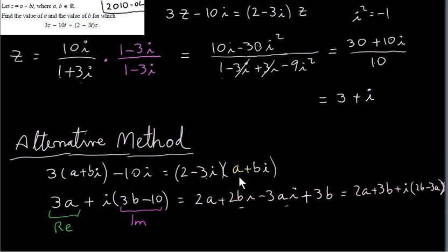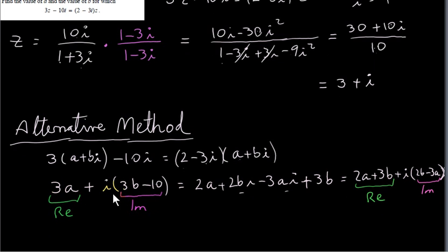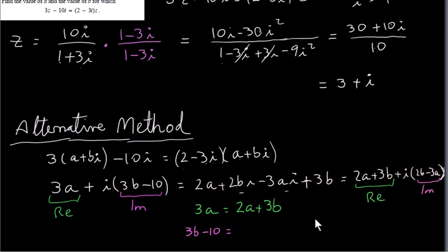Now I've written the right hand side as a single complex number. The real part is 2a plus 3b, and the imaginary part is the coefficient of i, which is 2b minus 3a. The only way the complex number on the left can equal the complex number on the right is if the real parts are equal and the imaginary parts are equal. So we get 3a equals 2a plus 3b, and 3b minus 10 equals 2b minus 3a. That's a pair of simultaneous equations with two unknowns, a and b.